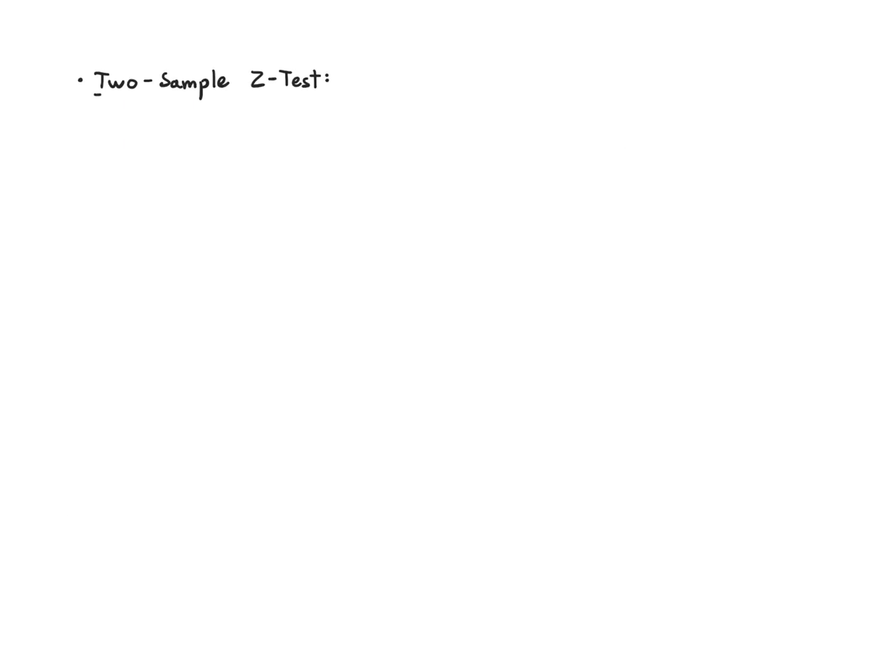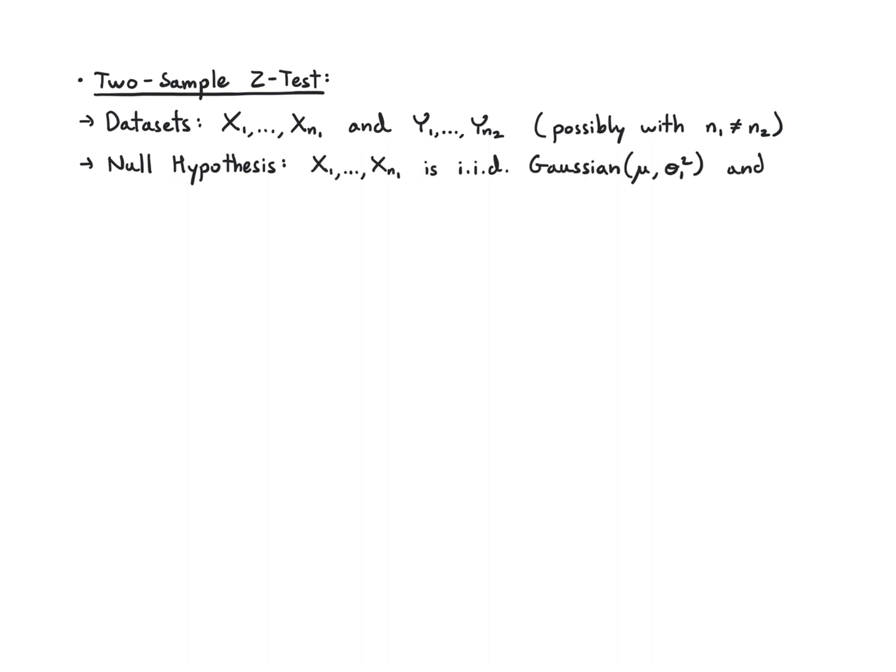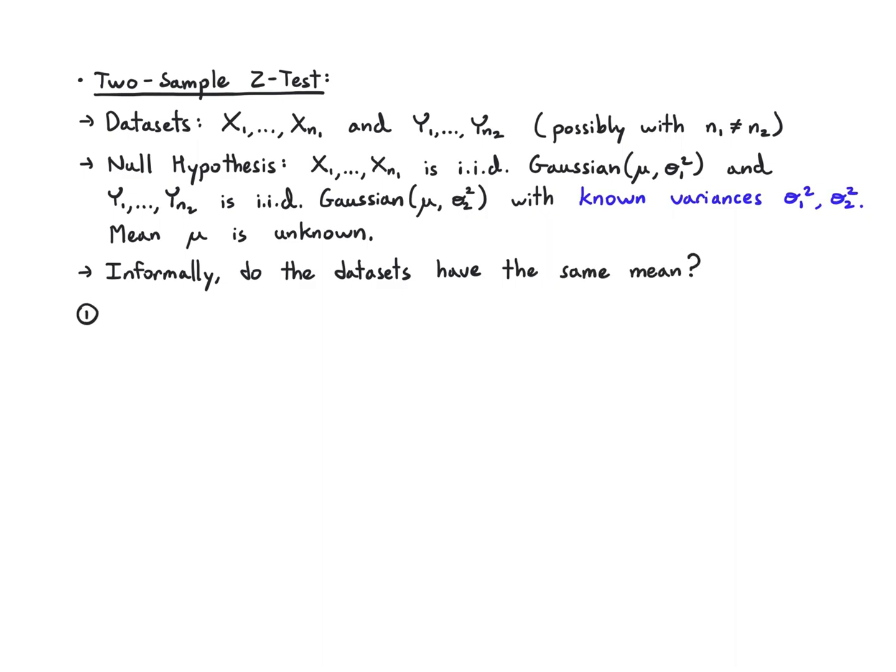What about a two-sample z-test? Now I'm going to have two datasets. I'm going to call them x1 up to xn1 and y1 up to yn2, meaning that the datasets may be of different sizes. The null hypothesis is that both these datasets are Gaussian with the same mean mu and possibly different variances. Since it's a z-test, we're going to say that we know these variances, sigma 1 squared and sigma 2 squared. The mean does not need to be known. We don't know the mean. But we assume under the null they have the same mean and we're asking, do they really have the same mean? Think about giving a drug and a placebo. That's what this is about.